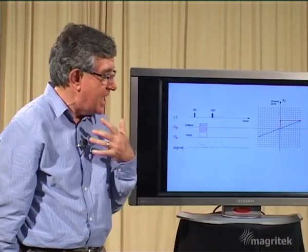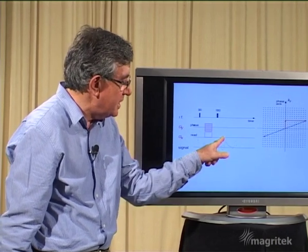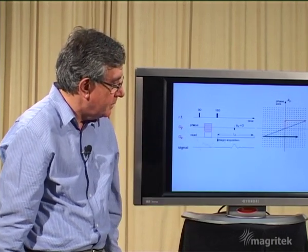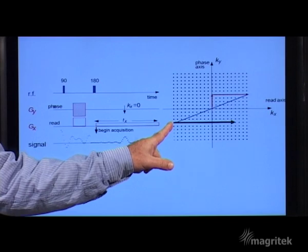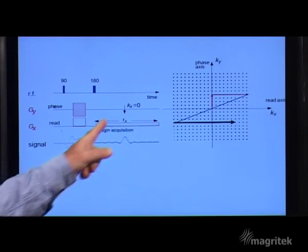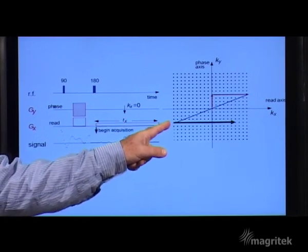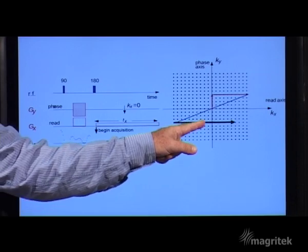And we're going to do so under the application of another gradient in the x-direction. So here we go. We've applied the gradient in the x-direction and with increasing time we traverse across to greater and greater values of k from the negative side through zero to the positive side.